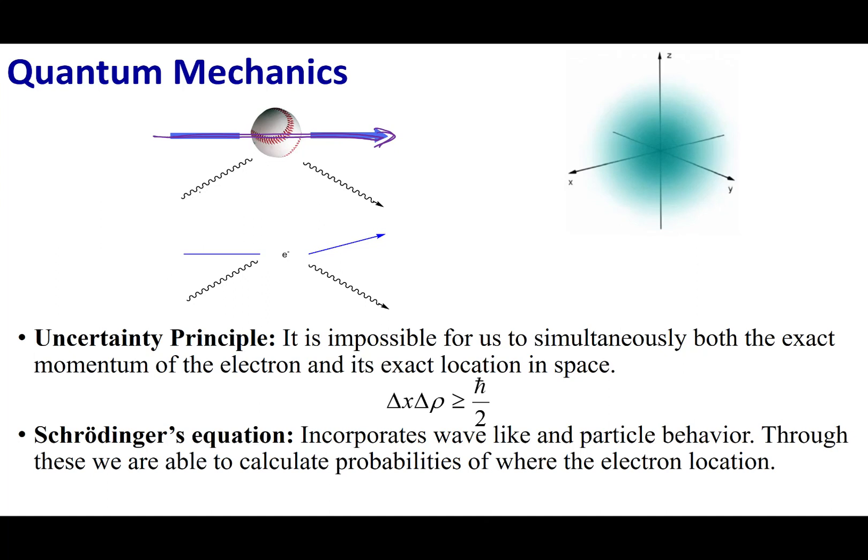To observe that ball, light has to strike that ball, reflect off, and go into your eyeball or some kind of detector. The point here is that this light that's coming in and light that's coming out, the act of observation doesn't affect what's happening to that baseball. It's insignificant compared to what the baseball is doing and will not affect its trajectory.